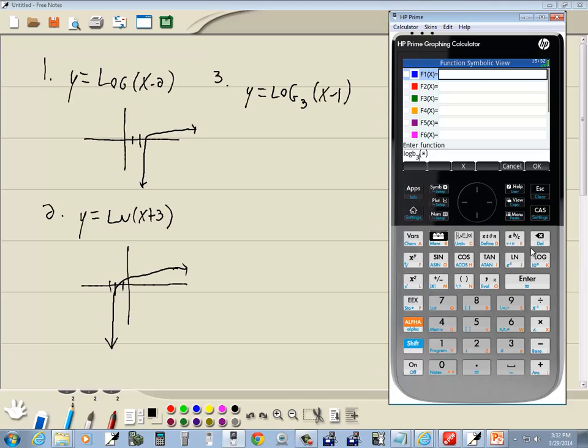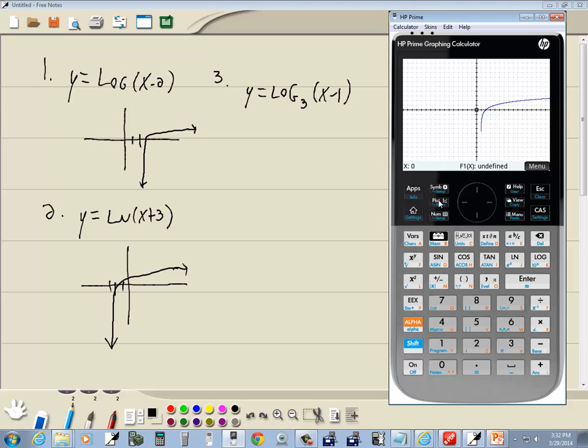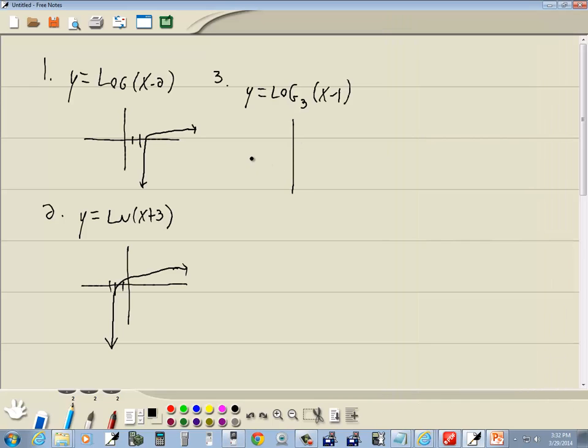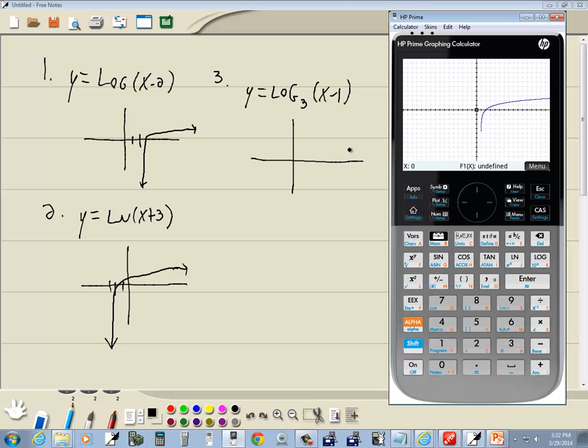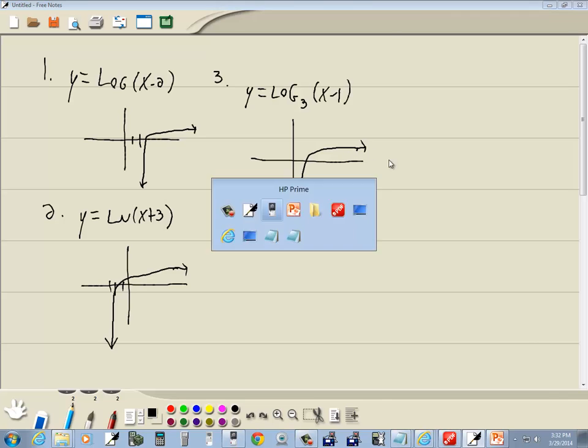So I'll put a 3 in. And then I right arrow over, and that'll put me inside my parentheses. And then I'll do x minus 1. And then press enter. So log base 3 of x minus 1. And now if we press plot, then that would be our graph.